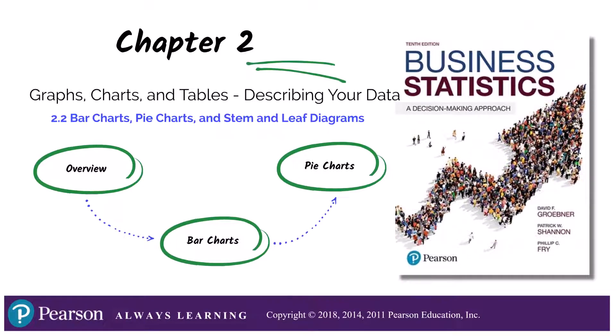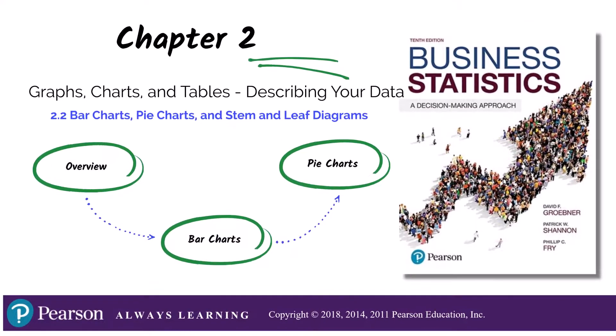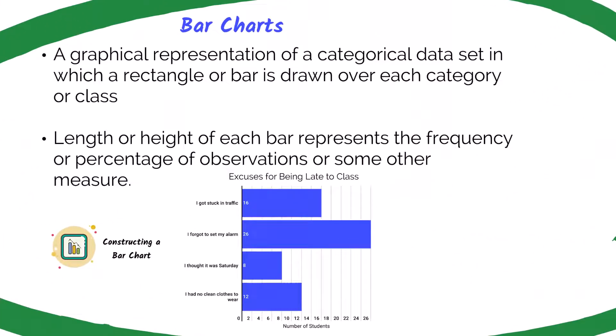First, let's talk about bar charts. A bar chart is a graphical representation of a categorical data set in which rectangles or bars are drawn over each category or class. The length or height of each bar represents the frequency or percentage of observations or some other measure. Let's take a closer look at this example bar chart.